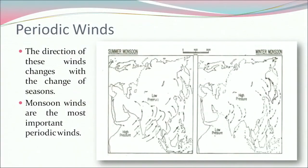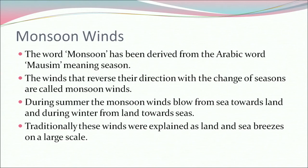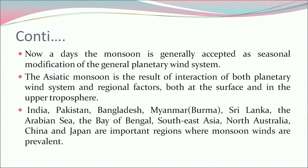Now what are periodic winds? The direction of these winds changes with the change of season. Monsoon winds are the most important periodic winds. The word monsoon has been derived from the Arabic word 'mossim', meaning season. The winds that reverse direction with the change of seasons are called monsoon winds. During summer, the monsoon winds blow from sea towards land, and during winter from land towards seas. Traditionally, these winds are explained as land and sea breezes on a large scale. Nowadays, the monsoon is generally accepted as a seasonal modification of the general planetary wind system. The Asiatic monsoon is the result of interaction of both the planetary wind system and regional factors, both at the surface and in the upper troposphere. India, Pakistan, Bangladesh, Myanmar, Sri Lanka, the Arabian Sea, the Bay of Bengal, Southeast Asia, North Australia, China and Japan are important regions where monsoon winds are prevalent.